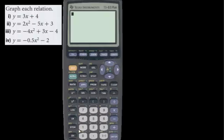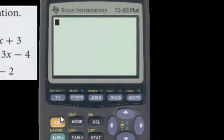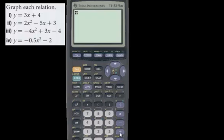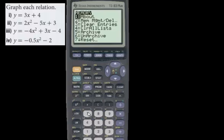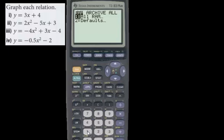Start off by just resetting this calculator. And the way that you do that is you go, first turn it on, and you want to go second function right there, plus sign, number seven which is reset, number one all RAM, and two reset. And you should get this screen right here.